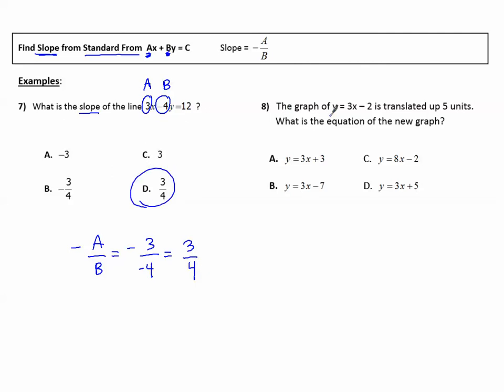Number 8. The graph of Y equals 3X minus 2 is translated up 5 units. What is the equation of the new graph?